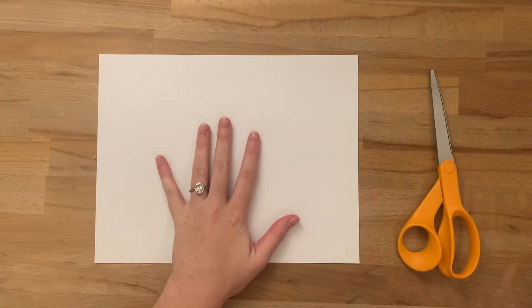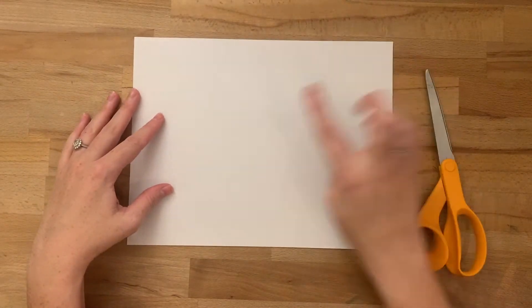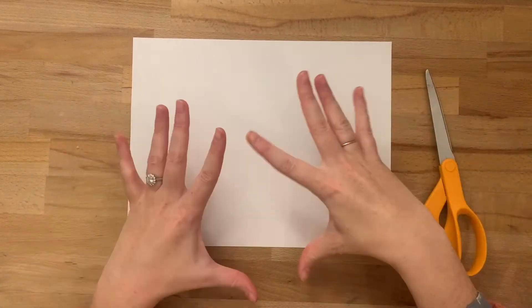All you need to create a paper snowflake is a sheet of white paper and some scissors. So the first thing I'm going to do is take my rectangular paper and I'm going to make it into a square.